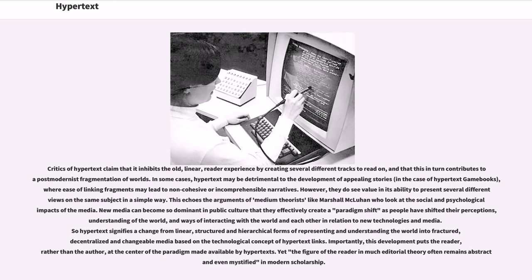Critics of hypertext claim that it inhibits the old, linear reader experience by creating several different tracks to read on, and that this in turn contributes to a postmodernist fragmentation of worlds. In some cases, hypertext may be detrimental to the development of appealing stories — in the case of hypertext gamebooks, where ease of linking fragments may lead to non-cohesive or incomprehensible narratives. However, critics do see value in its ability to present several different views on the same subject in a simple way. This echoes the arguments of medium theorists like Marshall McLuhan, who look at the social and psychological impacts of the media. New media can become so dominant in public culture that they effectively create a paradigm shift, as people have shifted their perceptions, understanding of the world, and ways of interacting with each other in relation to new technologies and media.